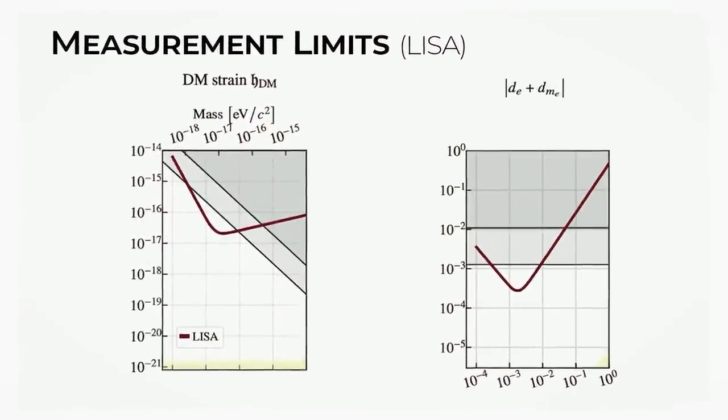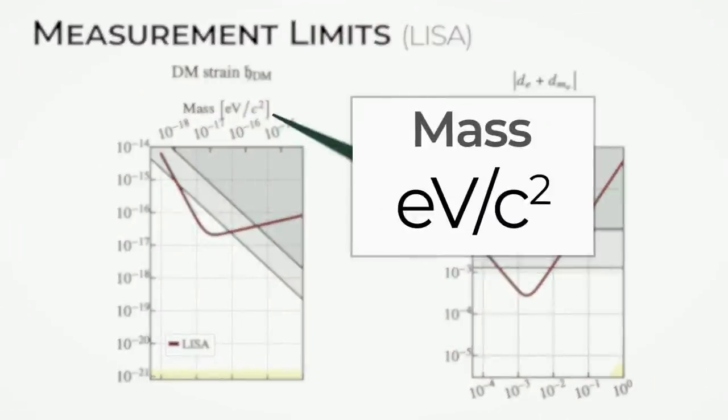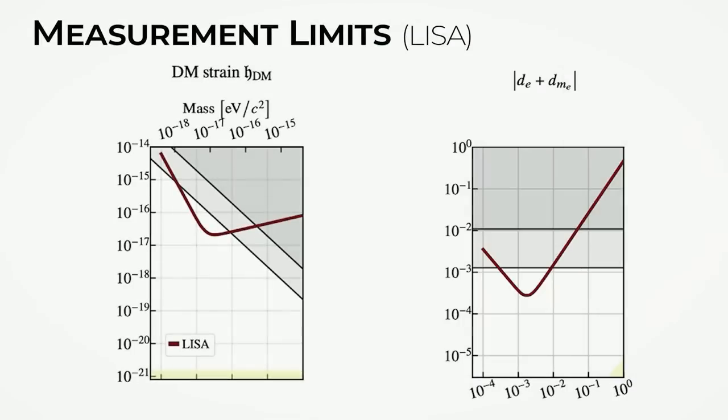Which is characterized as all particle masses are characterized by their electron volt energy divided by the speed of light squared. This is just relating their rest mass energy, E equals MC squared, dividing by C squared and getting the equivalent mass.